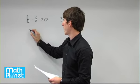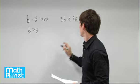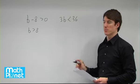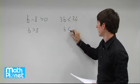Okay, so this gives us, if we add 8 to both sides, b is greater than 8. If on this one we divide both sides by 3, we get b is less than 12.